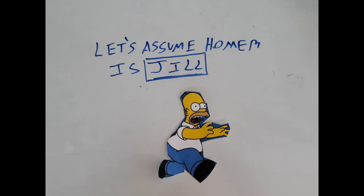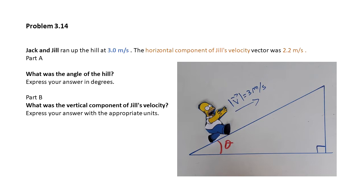For this problem we're going to assume that Homer represents Jill and also Jack because they're running in the same direction. He'll run up the hill at 3 meters per second.